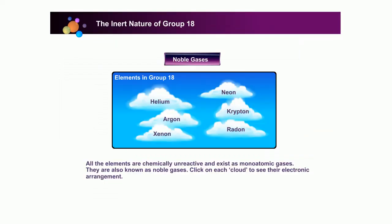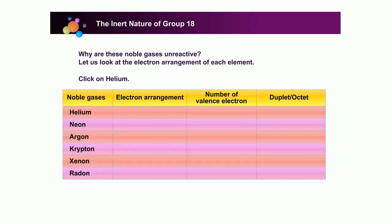All the elements are chemically unreactive and exist as monoatomic gases. They are also known as noble gases. Why are these noble gases unreactive?